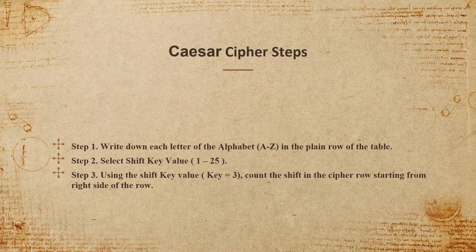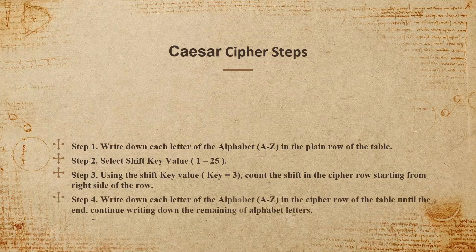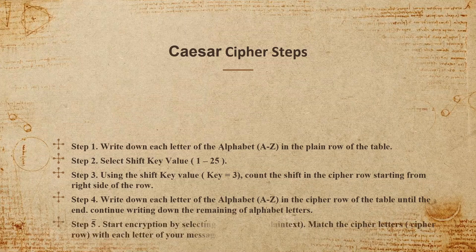Step three: using the shift key value — let's say key equals 3 — count the shift in the cipher row starting from the right side. Step four: write down each letter of the alphabet from A to Z in the cipher row. Finally, step five: start encryption by selecting your message, the plain text, and match the cipher letters in the cipher row of the table with each letter of your message in the plain row.